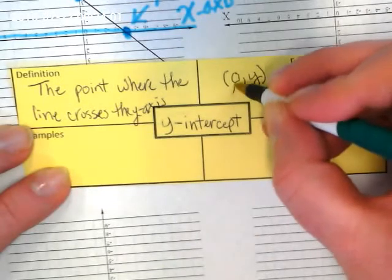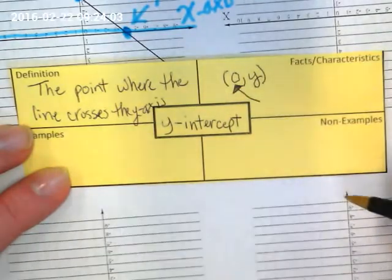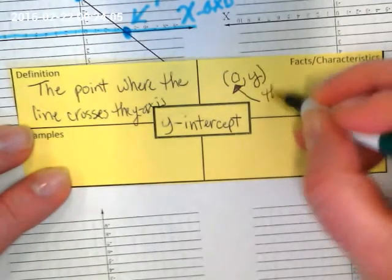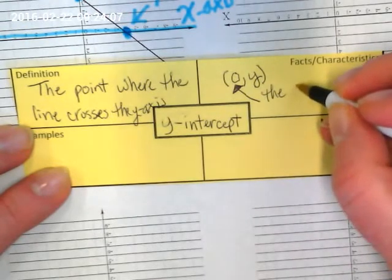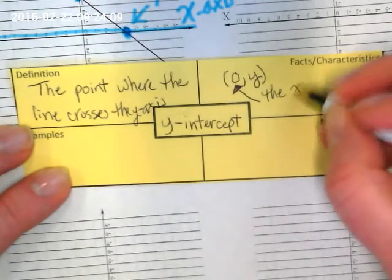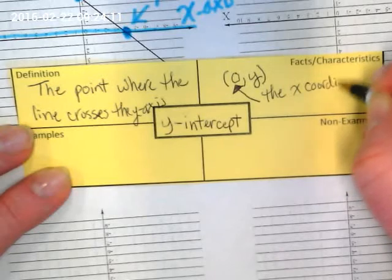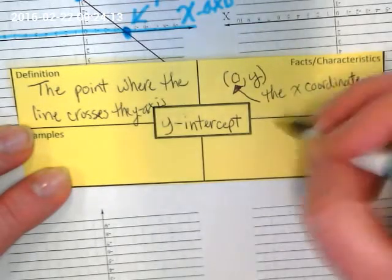So this right here is the x-coordinate, and in a y-intercept, the x-coordinate is always zero.